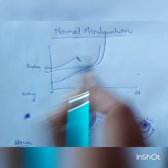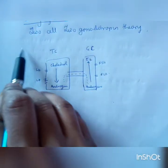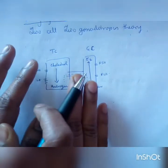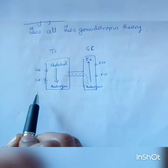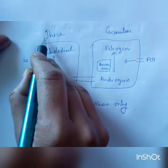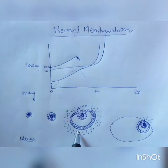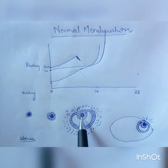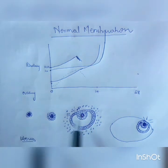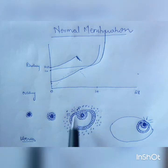Before we talk about the functions of LH, let me explain the 2-cell 2-gonadotropin theory, which is operative only in the early follicular phase. Looking at the antral follicle — here is your oocyte from the primordial follicle. These are the granulosa cells that have proliferated in the presence of FSH, and these are the theca cells that have organized from the adjoining stroma.